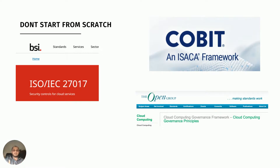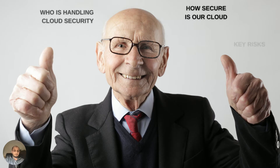The good news is you don't need to start from scratch. If you've already implemented ISO 27001, you just need to tailor it. I would definitely recommend ISO 27017, which builds upon 27001 and adds cloud-specific controls — covering things like responsibility between the cloud provider and customer, asset management, and virtual environment separation. COBIT from ISACA — Control Objectives for Information and Related Technology — also has great publications on cloud governance. Additionally, the Open Group has cloud computing governance principles you can reference.